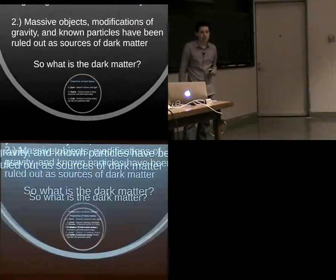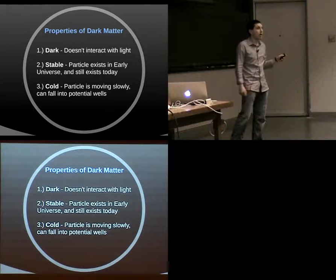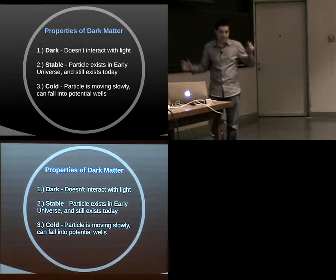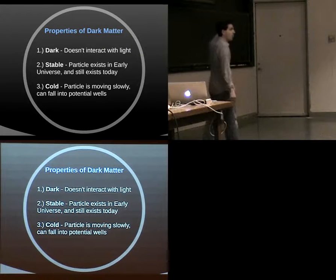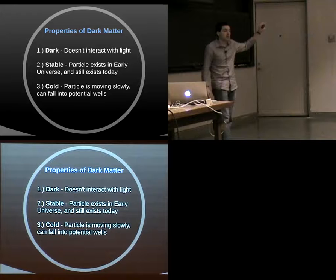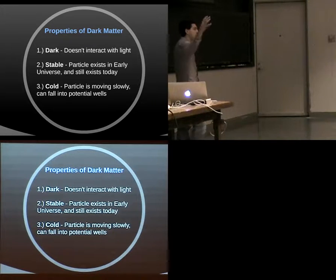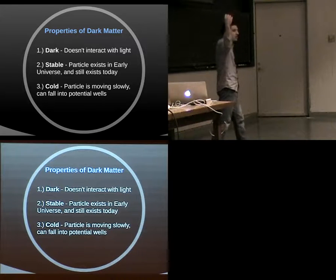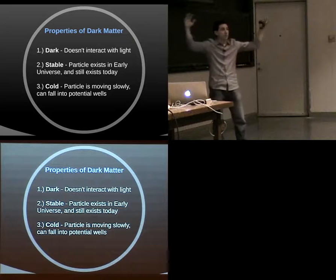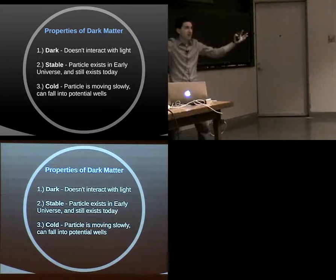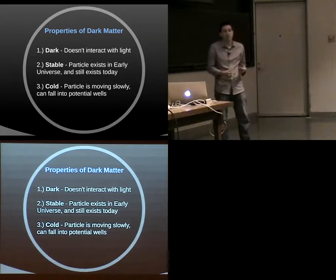What's the particle responsible for it? Remember the three characteristics any dark matter particle has to have. It has to be dark — it doesn't interact with light. It has to be stable, because the particle existed in the early universe and still exists today at about the same number density. And it has to be cold, meaning it moves slowly enough to fall into potential wells and form structure. If everything moves at the speed of light, nothing can collapse — you don't get galaxies, stars, or planets.